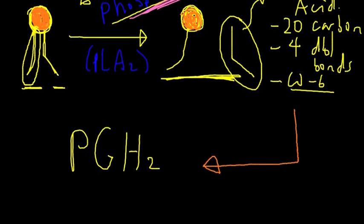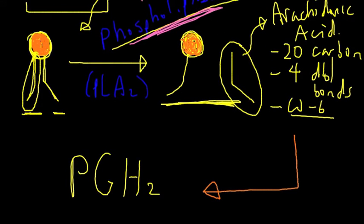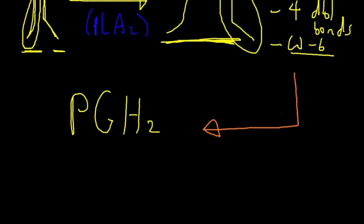So arachidonic acid now enters the cytosol from the cell membrane, and through an enzyme called, this is a Nobel Prize winning enzyme, called cyclooxygenase, abbreviated as COX.